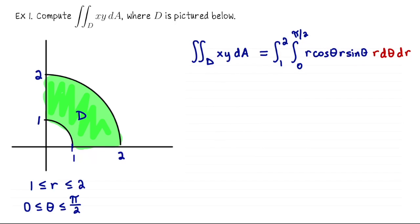So overall this integrand is r³ cos θ sin θ. That factors into a product of a function of r, r³, with a function of theta, cos θ sin θ. So in other words, I can write this as the integral from 1 to 2 of r³ dr times the integral from 0 to π/2 of cos θ sin θ dθ.